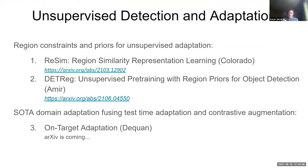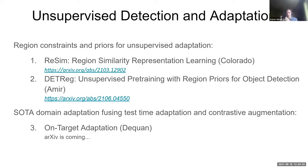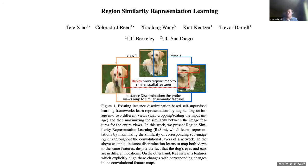There are going to be three presentations today. The first two are our latest work on bringing the full power of unsupervised learning to detection. We have two papers: one that imposes region constraints that were previously unexplored — we call it RE-Sim, region similarity representation learning. The second adds priors from unsupervised region knowledge, specifically unsupervised saliency from edges. And the last is a new state-of-the-art domain adaptation method which fuses test-time adaptation and contrastive augmentation.